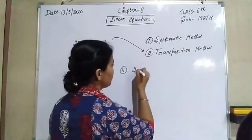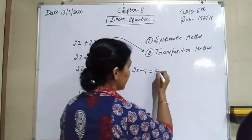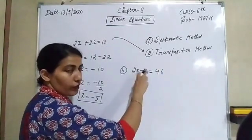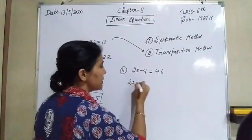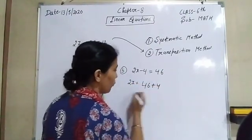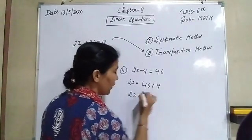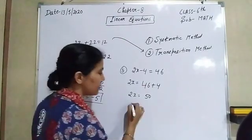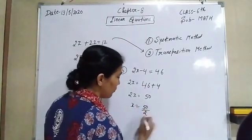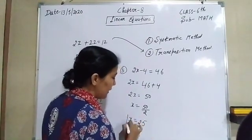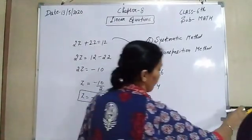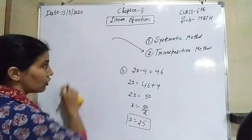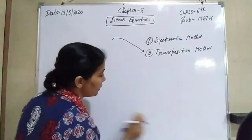The next equation is 2x - 4 = 46. Solving by transposition: the negative 4 on the left moves to the right and becomes positive 4, giving 2x = 46 + 4 = 50. The 2 is multiplied with x on the left, so it becomes division on the right: x = 50/2 = 25, which is the required answer. Now let's move to the next question on this worksheet.